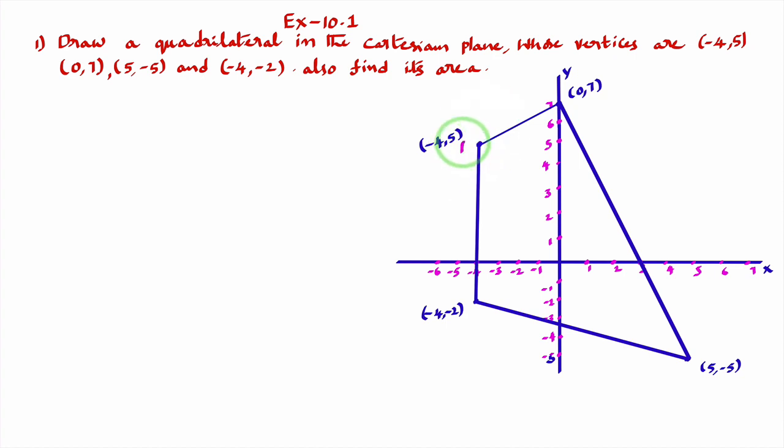Now, I'll name the vertices. I'll name this vertex as A, this vertex as B, this vertex as C and this vertex as D. What they are asking in the question, find its area.